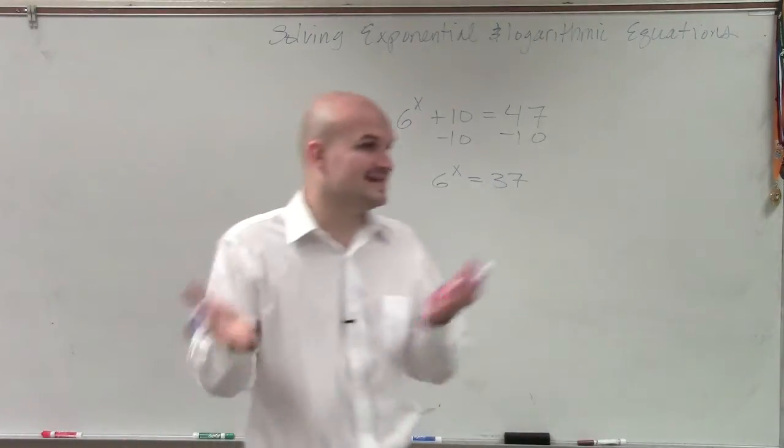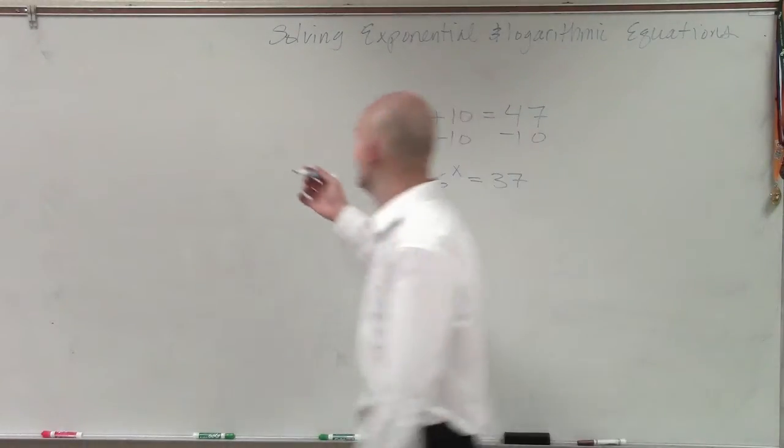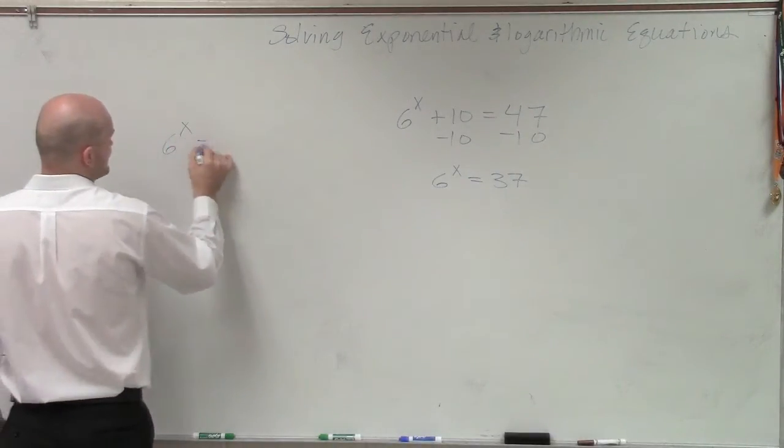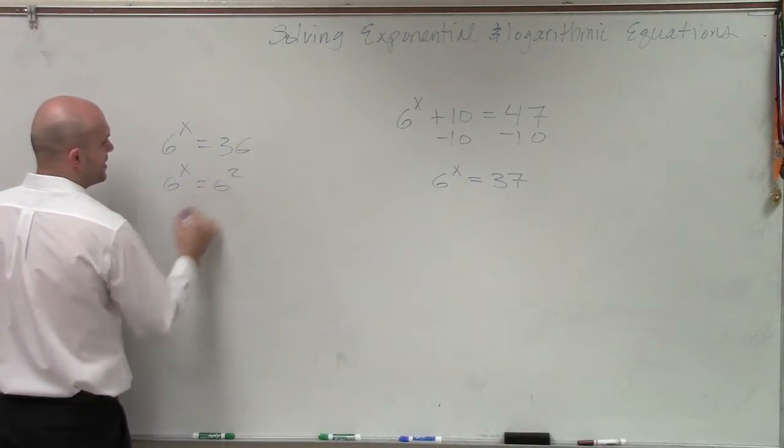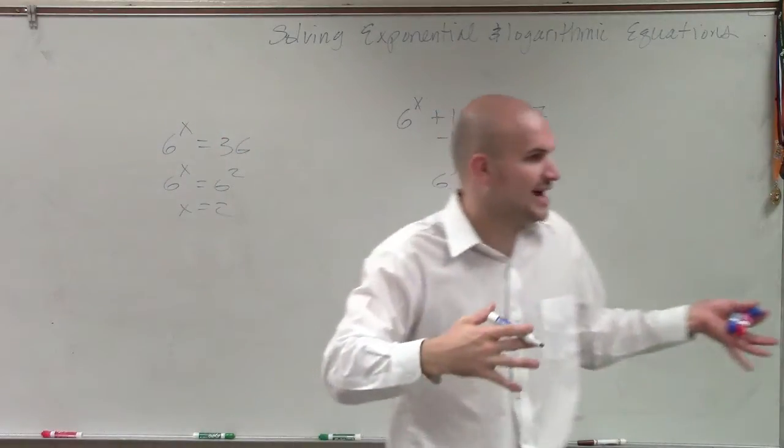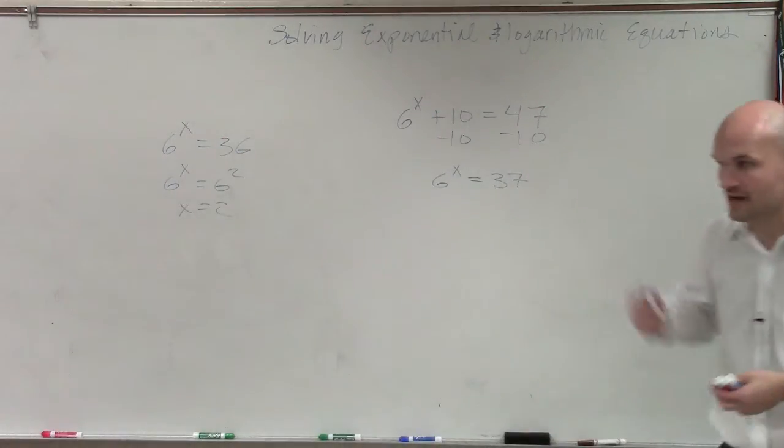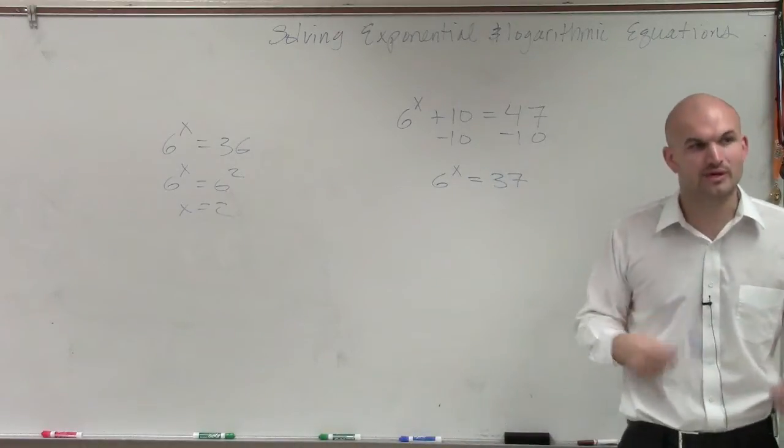Now, unfortunately, we know we cannot rewrite that 37 as a base 6. If my problem was 6 to the x equals 36, then we'd be all good. 6 to the x equals 6 squared, x equals 2. That'd be nice if we had that. Unfortunately, we can't do that for this problem. So what we're going to have to do is determine another way that we can solve this.